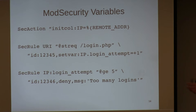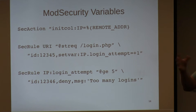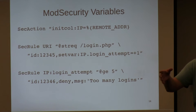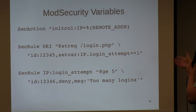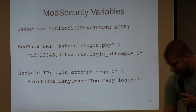ModSecurity has an action called initcol where you define all the variables associated with an IP based on a value — in this case the remote IP address. You can use any logic from ModSecurity's DSL to assign to a particular collection for persistent storage. As a brief example: if the client requests login.php, bump a variable called login.attempt; if that variable is greater than five, deny the request. Don't actually do that in production.